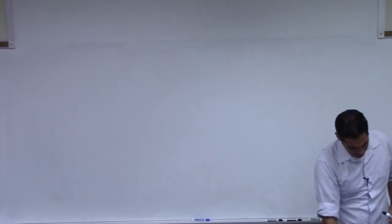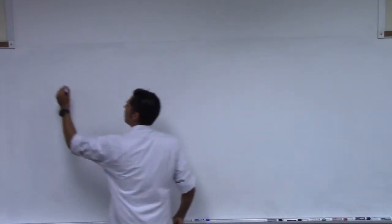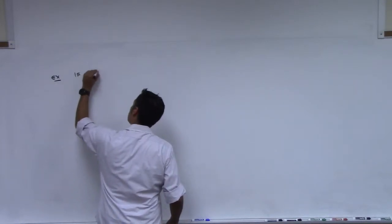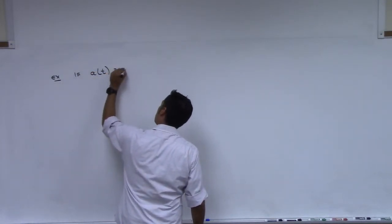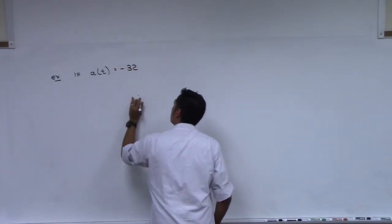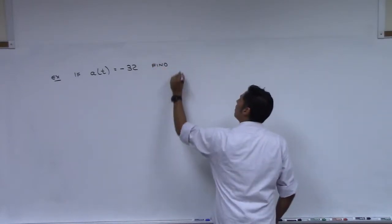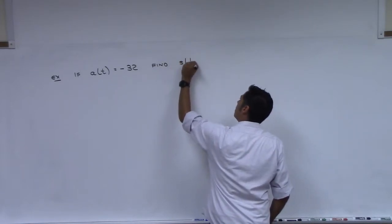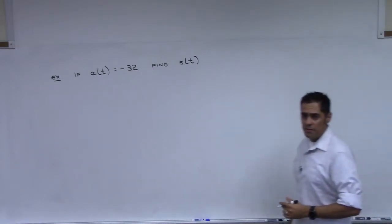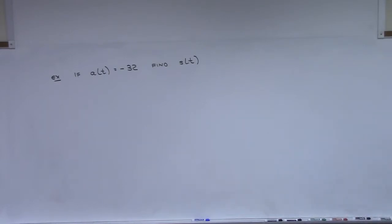Before I do this, do I want some notation? No. I'll just go straight to an example. If a of t equals negative 32, find s of t. I'm not putting a lot of detail here because I just drew a picture on the board for you. I'm giving you an acceleration function, and I'm asking you for the position function, right?